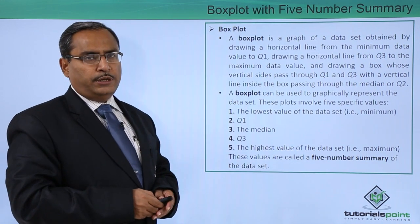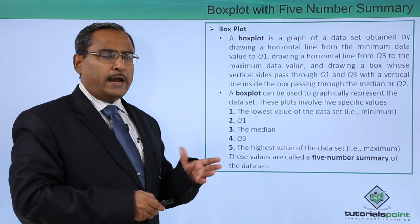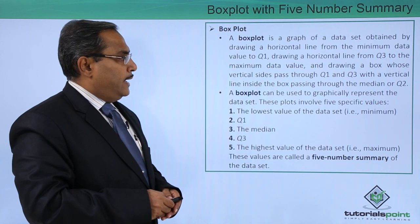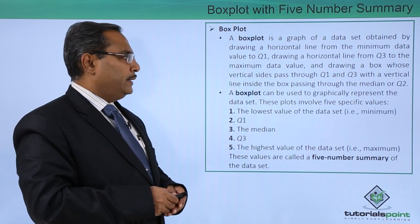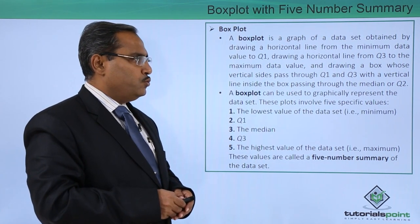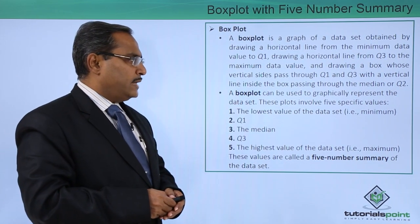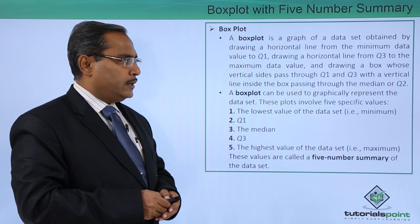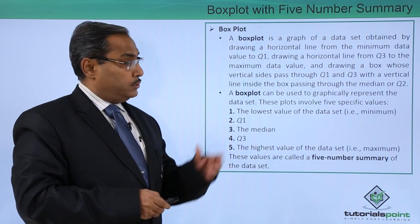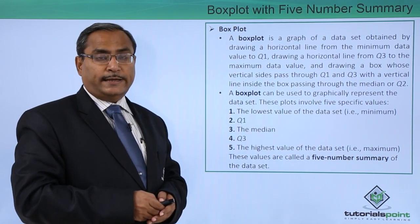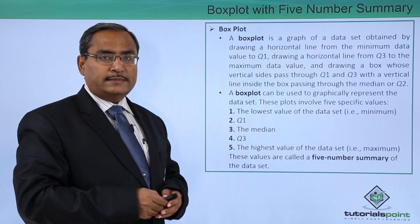Here Q1 and Q3 are quartile 1 and quartile 3. And drawing a box whose vertical sides pass through Q1 and Q3 with a vertical line inside the box passing through the median or Q2. This Q2 is known as the second quartile and can also be called the median.